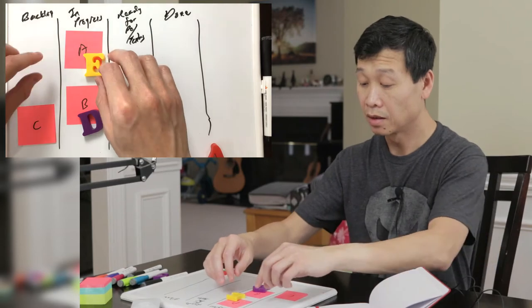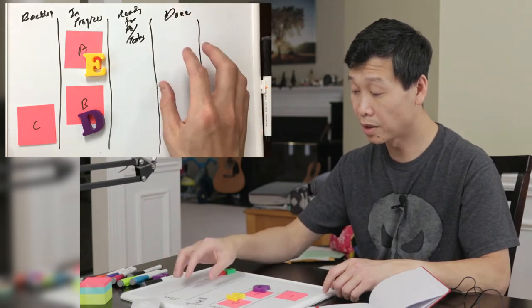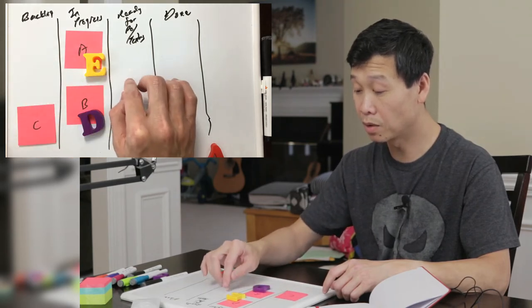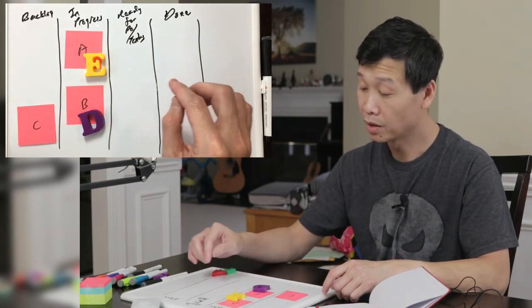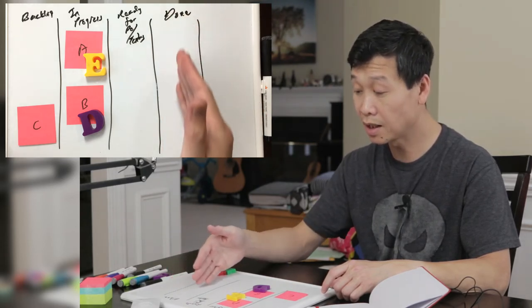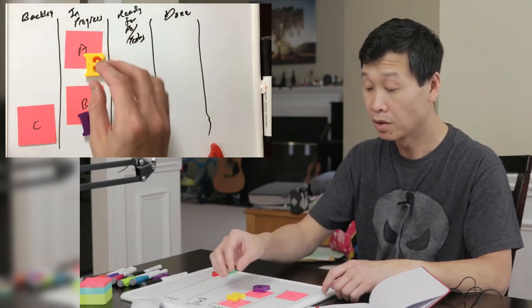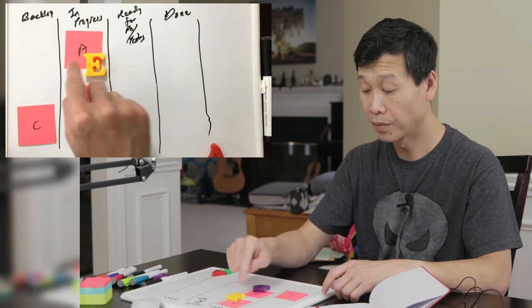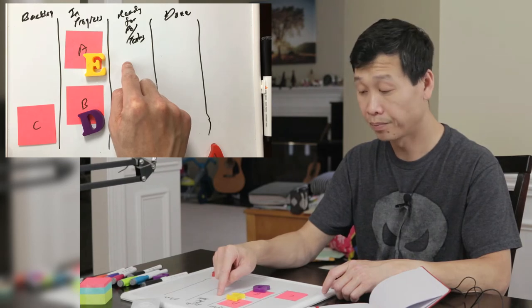What happens during stand up, walking the board means that we're going to look at the column on the far right, which is done. The goal is to see how we can get our stories from backlog to in progress to ready for PO or testing and then to done. During a stand up, you look at the stories, anything in done? Nothing. Anything in this column? Nothing. Anything in the progress column? Yes. The first thing we look at is whoever works on story A will talk about story A. What have we done with story A in order to move it to the next column?